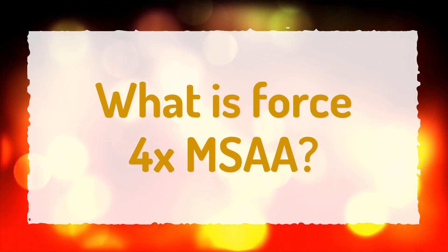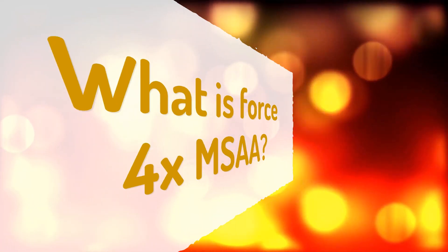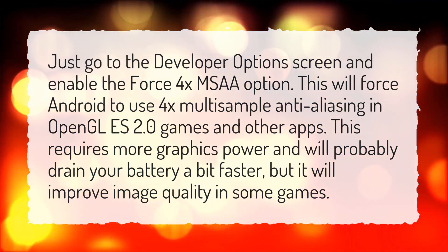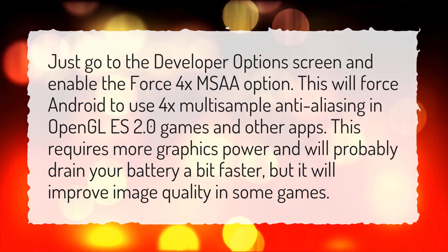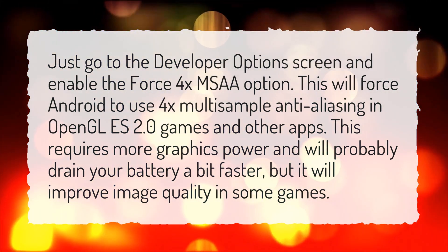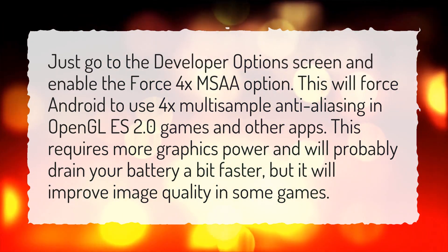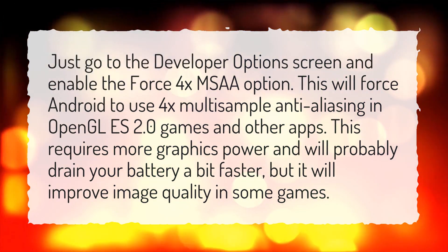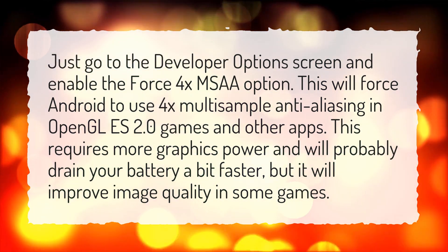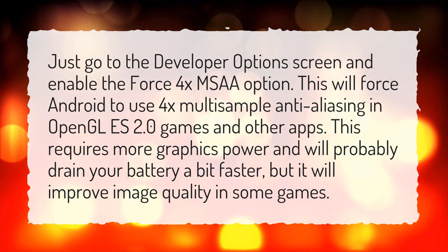What is Force 4X MSAA? Just go to the Developer Options screen and enable the Force 4X MSAA option. This will force Android to use 4X multi-sample anti-aliasing in OpenGL 2.0 games and other apps. This requires more graphics power and will probably drain your battery a bit faster, but it will improve image quality in some games.